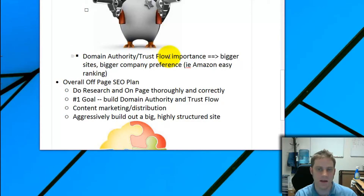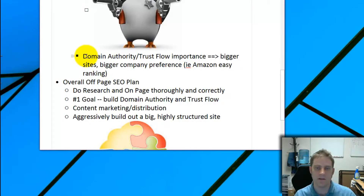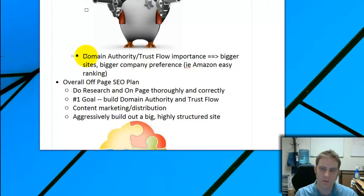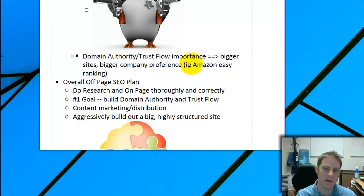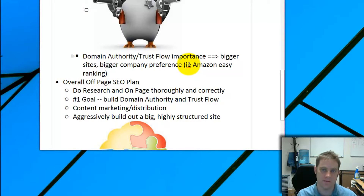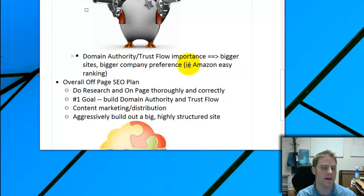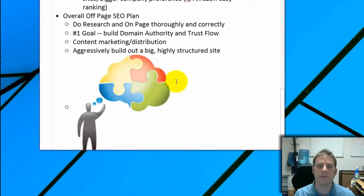The higher your Domain Authority and Trust Flow, the more Google trusts you and the easier it is to rank for search phrases. As you build these metrics, pretty much all of the search phrases you're tracking go up. That's part of why Amazon, YouTube, and Wikipedia — all with Domain Authority of 100 — are astronomically more powerful than, say, a random dentist's website.